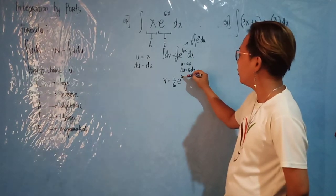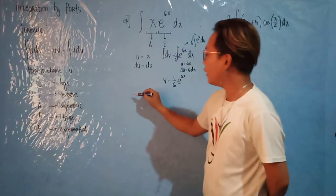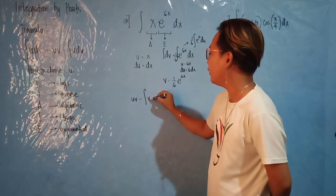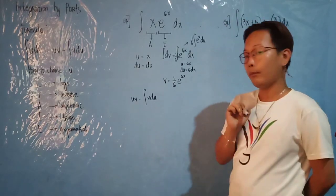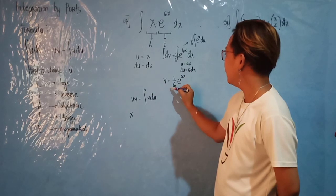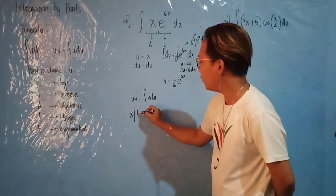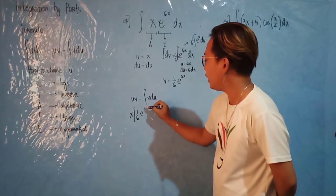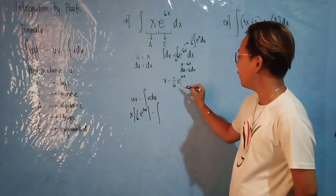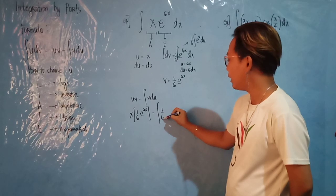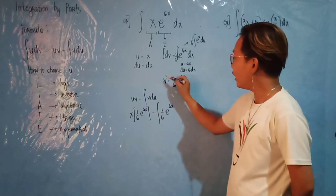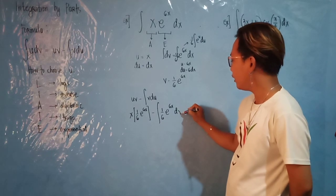Now follow the formula by simply having uv minus the integral of v du. You will have u is x, v is 1 over 6 e raised to 6x, minus the integral of v, which is 1 over 6 e raised to 6x, then your du is dx.